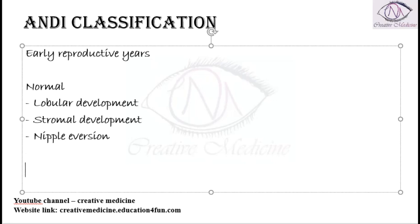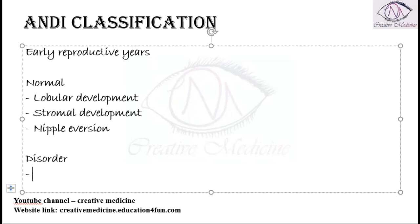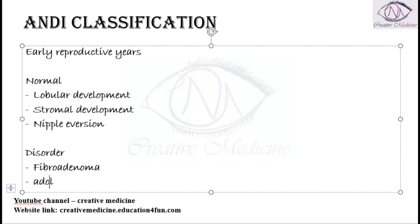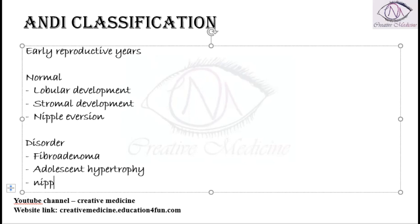What are the disorders which occur in Early Reproductive Years? In Early Reproductive Years, you will see the presence of Fibroadenoma. There will be Adolescent Hypertrophy seen with Nipple Inversion. These are the disorders.